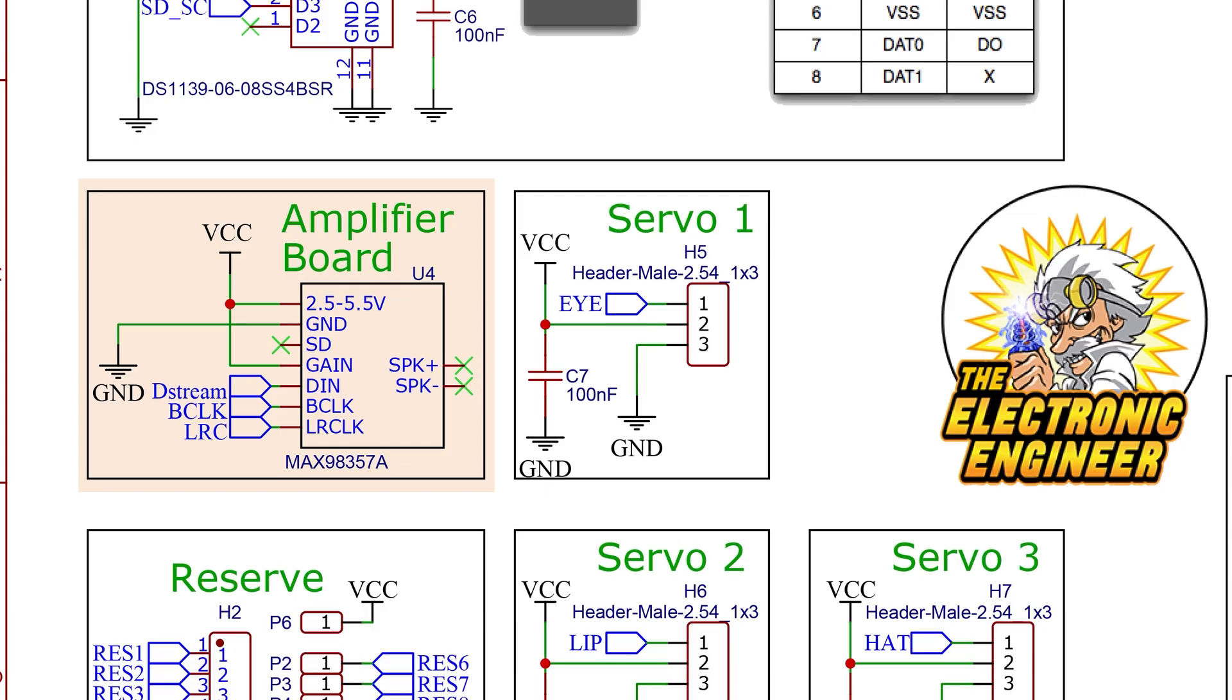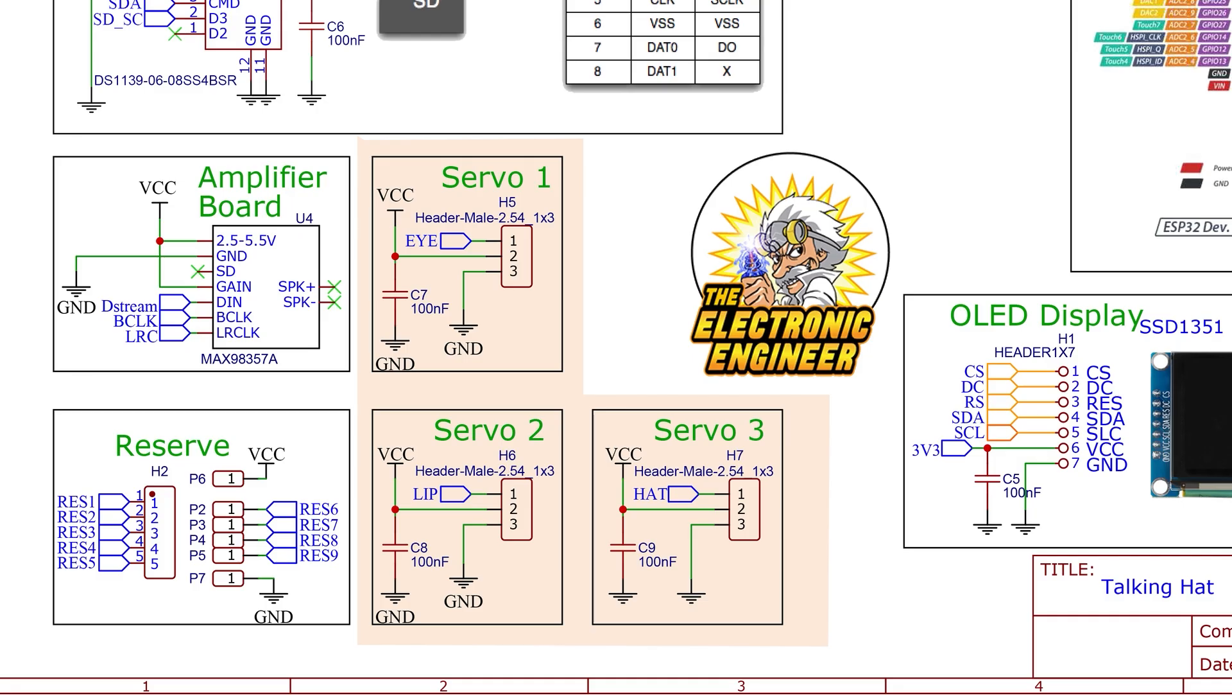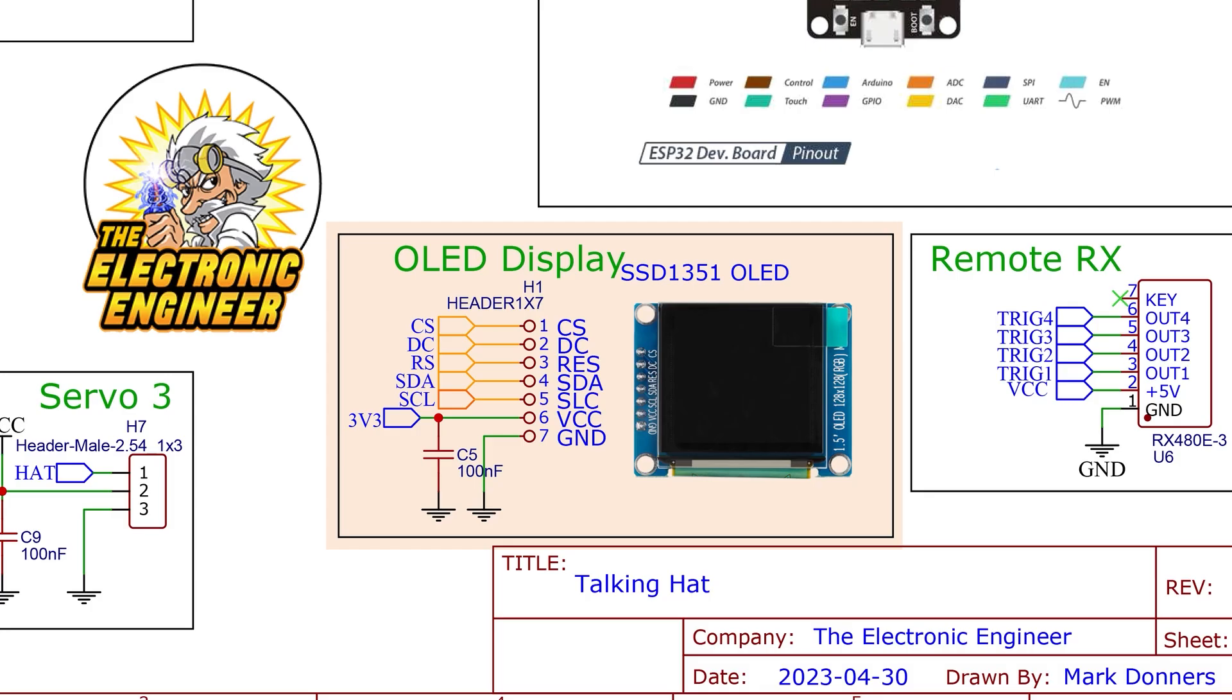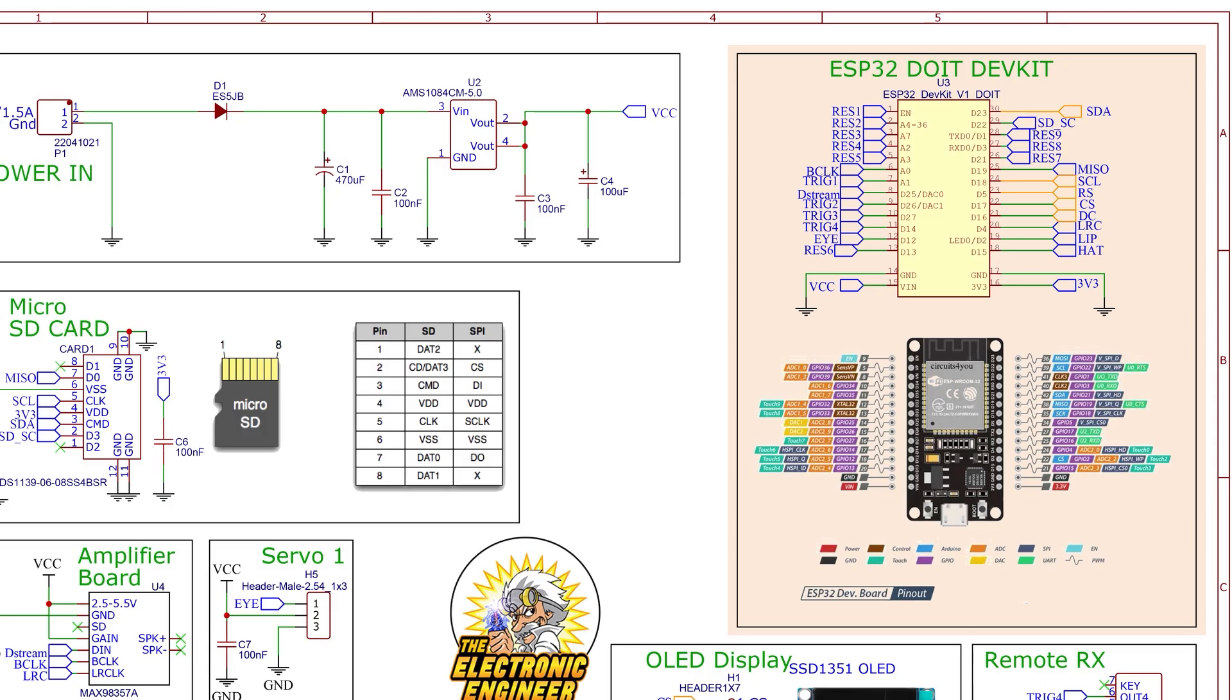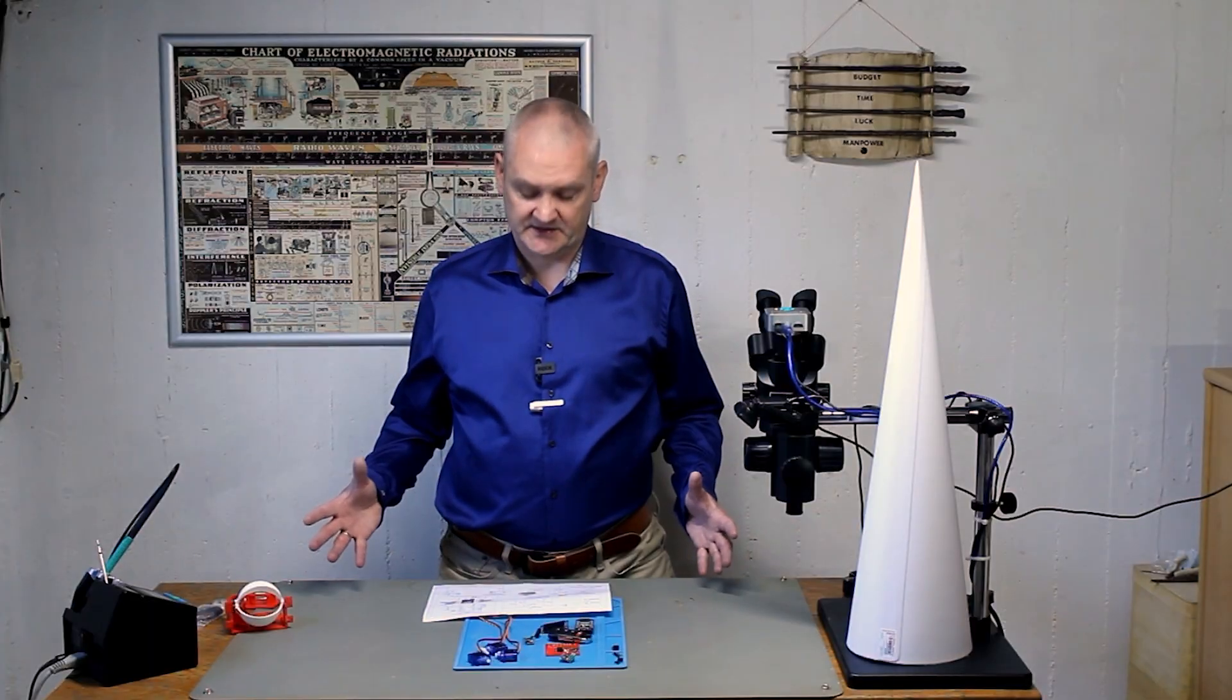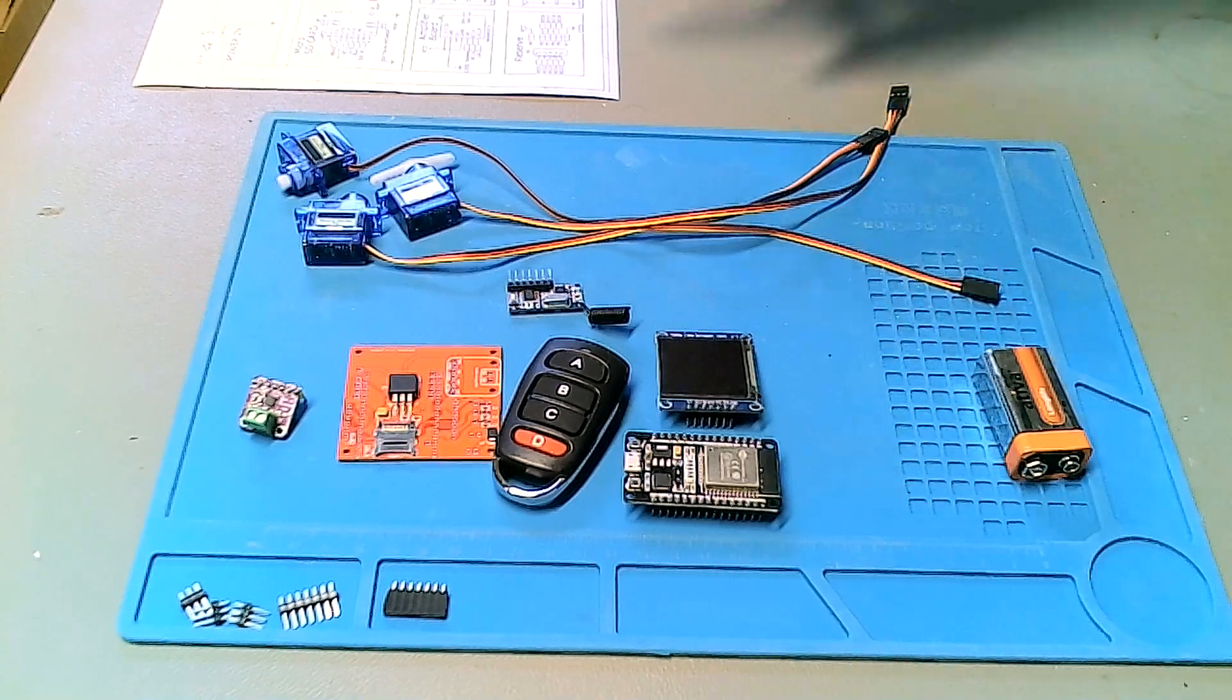We have our amplifier board connected to the microcontroller. And we have three servos that will be used. We have an OLED display that will be used to show an eye. And of course we have an input for our remote controller and the microcontroller itself. And that's all there is to it. Now let me walk you through the individual parts.